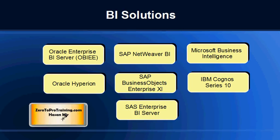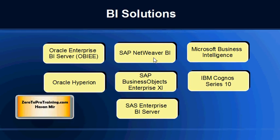There are many vendors that offer business intelligence solutions. The popular ones include Oracle and SAP as the big players. Oracle Hyperion is a popular product. SAP offers SAP NetWeaver Business Intelligence and SAP Business Objects. We also have SAS Enterprise Business Intelligence Server, Microsoft Business Intelligence, and IBM's product IBM Cognos Series 10.